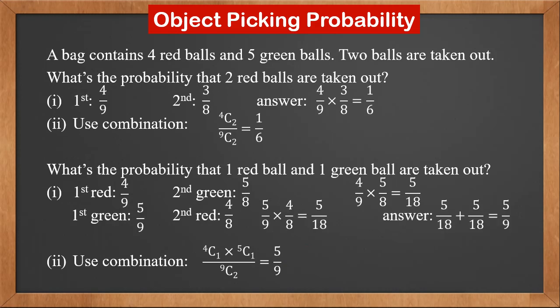Looking back at the probability approach, the question asks for one red ball and one green ball and doesn't mention the order. So it could be two cases: first red and second green, or first green and second red. We missed the second case. The probability that the first ball is green is five over nine; after a green ball is taken out, there are eight balls left and four are red, so the second ball is red with probability four over eight. That gives five over eighteen. Therefore, the answer should be five over eighteen plus five over eighteen, which is five over nine — matching the combination result.